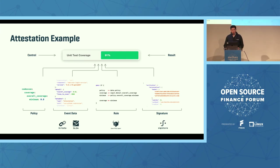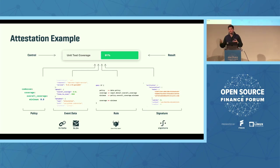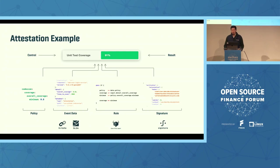An attestation example is a combination of a few pieces. On the left-hand side you see the control — let's use unit test coverage as the example. On the right-hand side is the result: this code base has 91% code coverage with unit tests. The policy piece is the predefined policy agreed upon that says you need 80% for this example. Then the raw event data captures the results of the unit test executed in the pipeline along with all the context. The rule written in Open Policy Agent checks if your coverage is greater than or equal to the minimum. Finally, the digital signature of the result of all those pieces ensures that at deployment time we can verify the data is authentic and of the highest integrity.